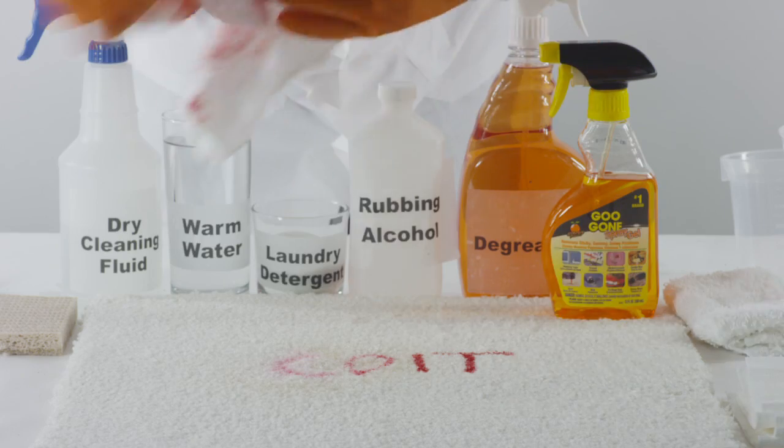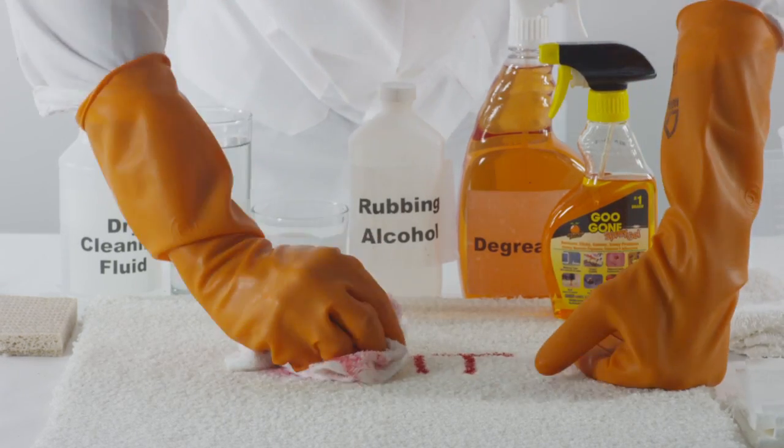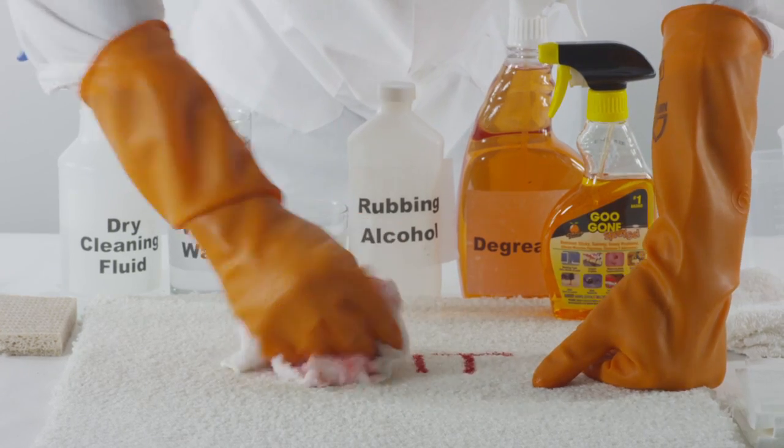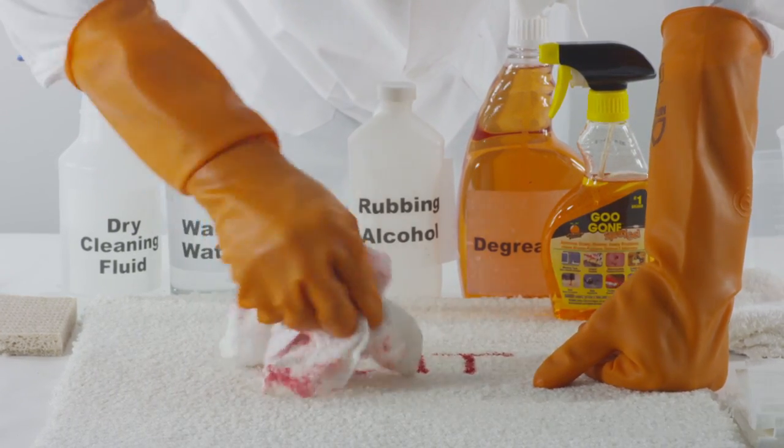Keep repeating this until the cloth gradually begins to absorb the color. Dry cleaning fluid can also be used if Goo Gone isn't something you have handy.